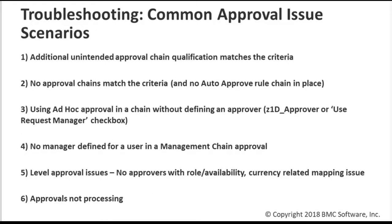We're going to go over some common scenarios here. The first one: an unintended approval chain matches the criteria you've specified. The second is kind of the opposite — no approval chains match and there's no auto-approval rule in place. Third: using an ad hoc approval in a chain but not setting the approver. Fourth: no manager defined for a management chain approval. Fifth: for level approval, no approvers with the request approval role or availability. And we've seen some issues with currency. The last one is approvals in general not processing. Let's go into each one in more detail.